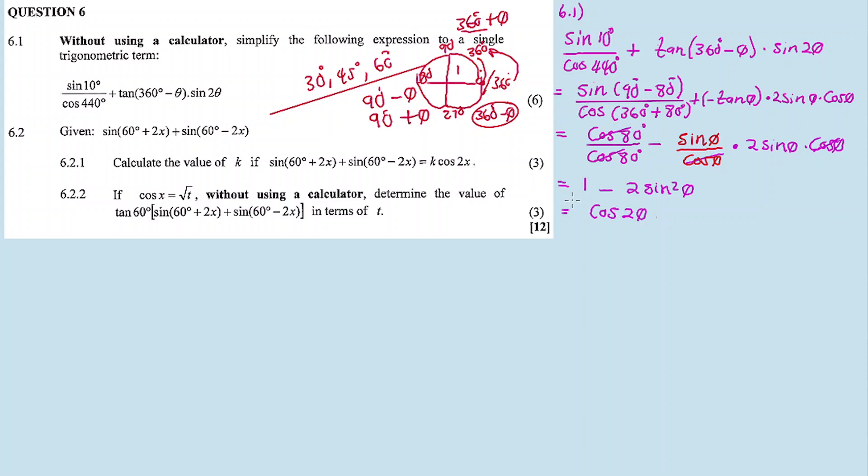But this reminds me of a formula, an identity of a double angle. So our single trigonometric term will be cos 2 theta. This is our answer.